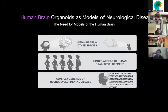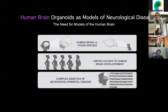For ethical reasons and the obvious limited access to human brain development, we really need tractable systems. And another very important reason is that if we really want to understand the complex genetics of neurodevelopmental disease, we need to use models that mimic human genetics. That's how human brain organoids can really help us move forward in this space.